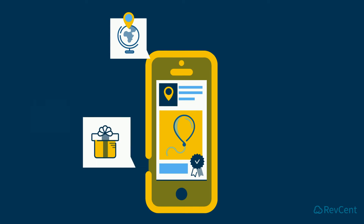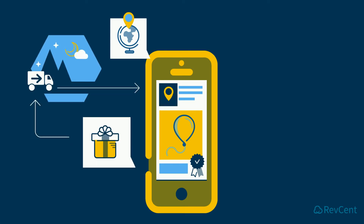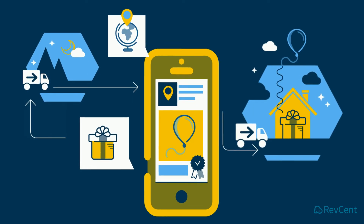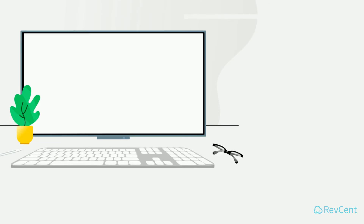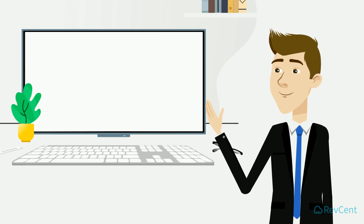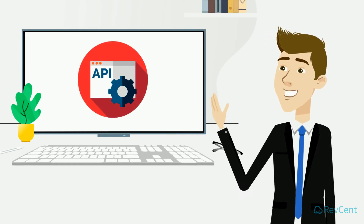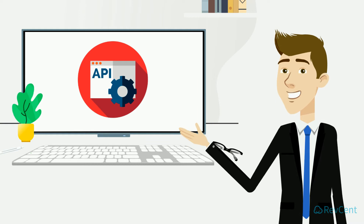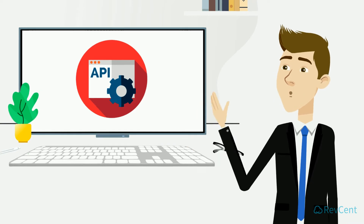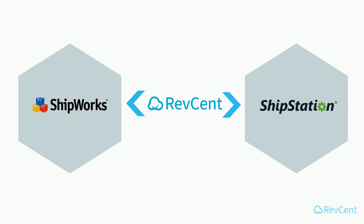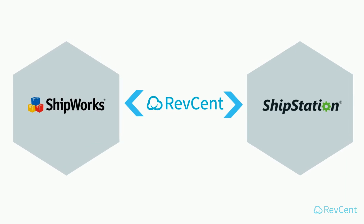Fulfillment and shipping for all your sales is a breeze with RevSent. If you employ a fulfillment center with its own software, RevSent can easily integrate with its API. If you do your own shipping, that's great too. RevSent is fully integrated with ShipStation and ShipWorks for shipping in large batches.